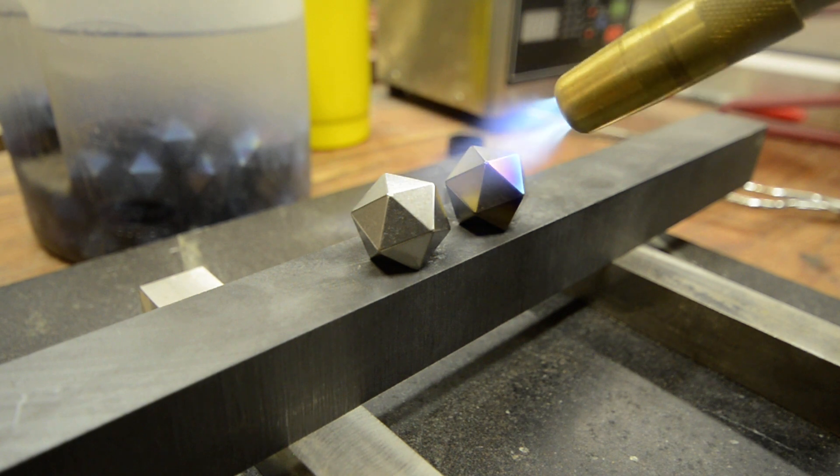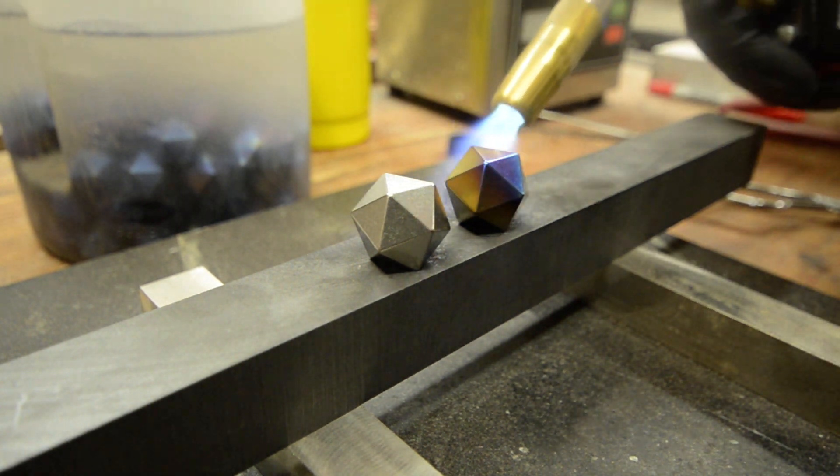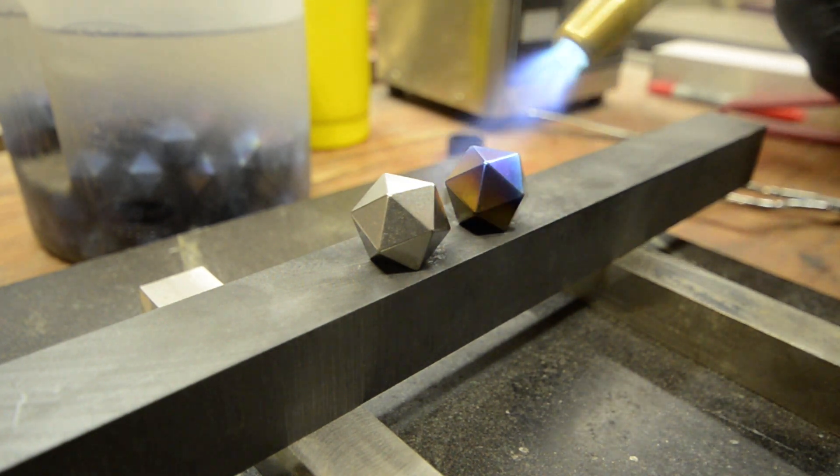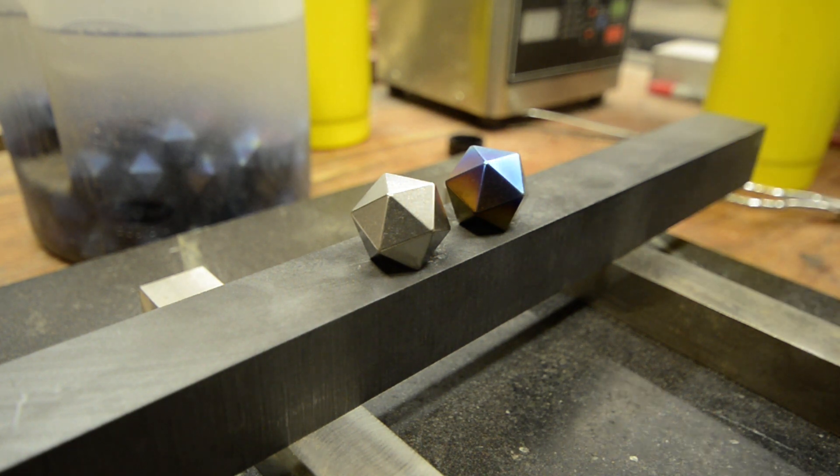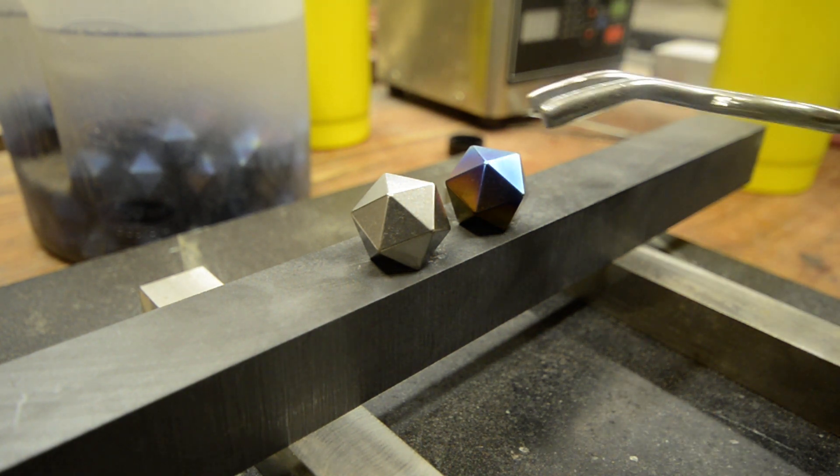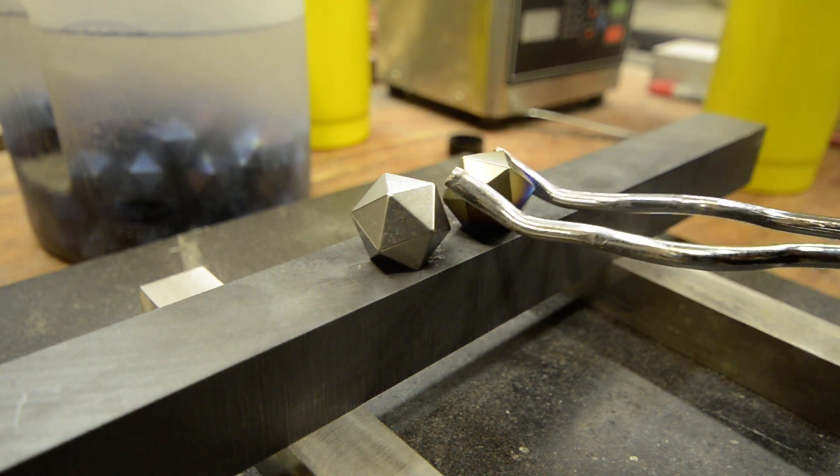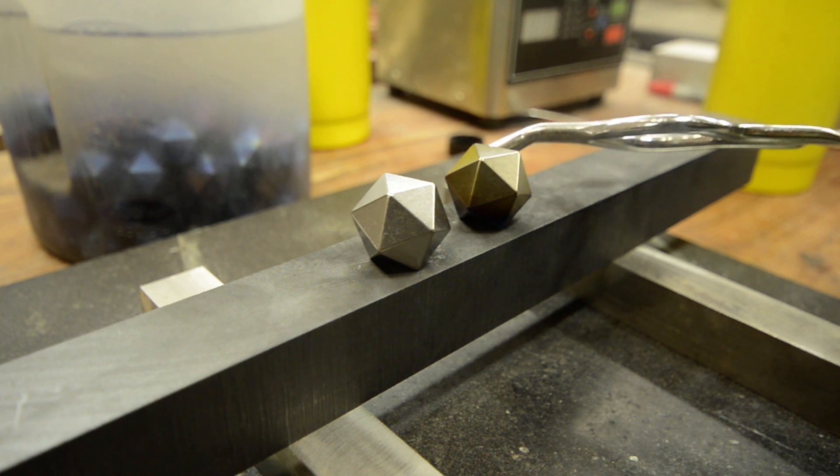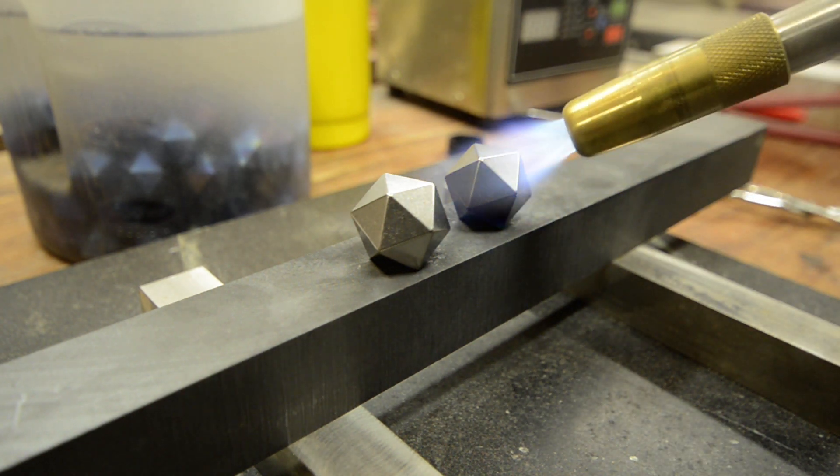As you can see, we start to heat this up, our color starts to come on. We start out with a nice bronze straw color and then we go to a purple, to a royal blue, to a bright ice blue that you see there. And if we get it really, really hot we can even get a green. But that color is exceedingly hard to maintain because it's a very narrow temperature range. So we don't do that one very often.